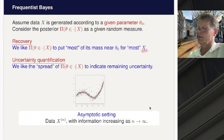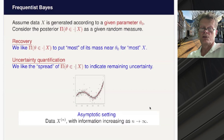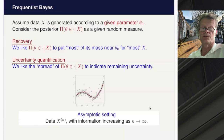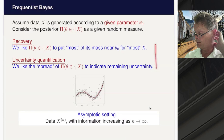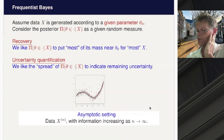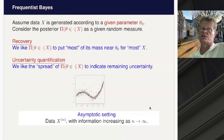We would like the posterior to concentrate near the true parameter theta_0 when the data X is indeed generated from theta_0. We also want the spread of the posterior — around the posterior mean — to give correct confidence statements about theta_0. We study these properties asymptotically where n is the number of data points and information increases as n goes to infinity, since it's very difficult mathematically for finite sample size.